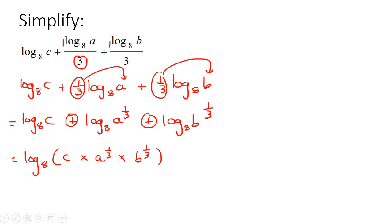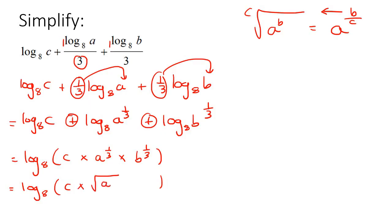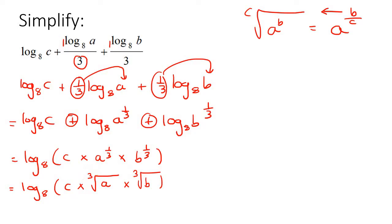Your teacher might be okay with leaving the answer like that, but some teachers might want you to rewrite it in root form. Remember that a^(b/c) becomes the c-th root of a^b. So that becomes log₈(∛c × ∛a × ∛b). Since the two roots have the same outside power, you can combine them: log₈(c · ∛(ab)).